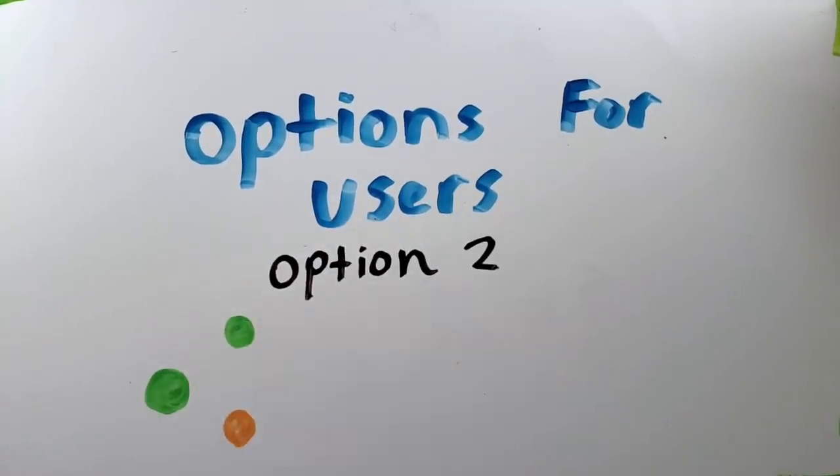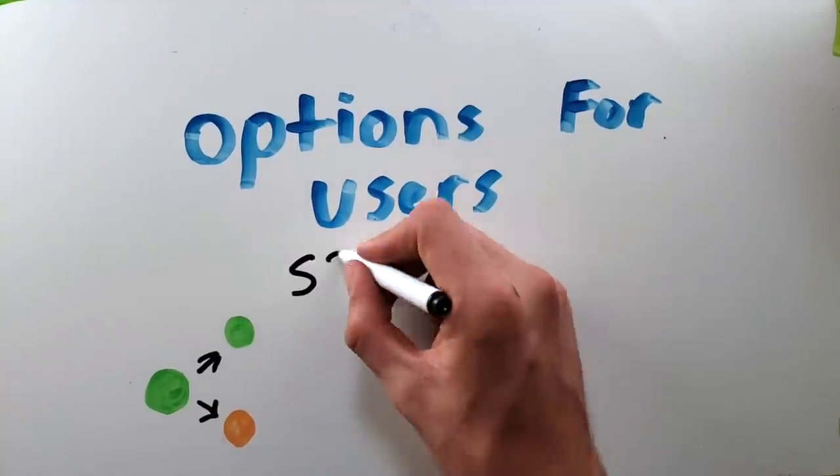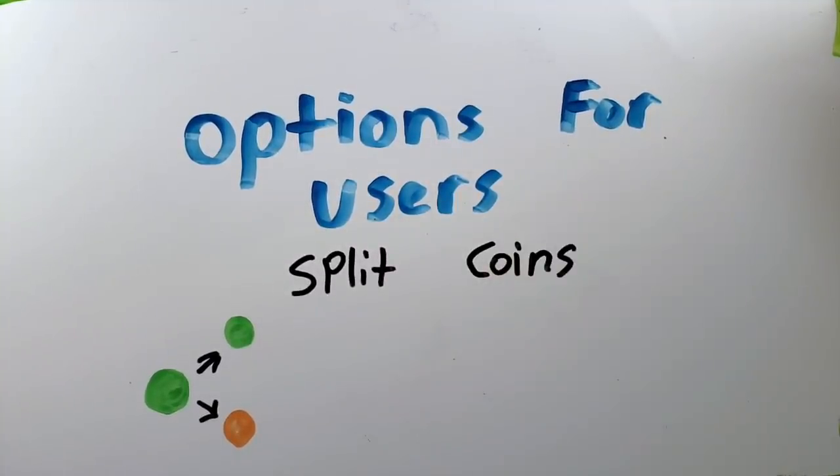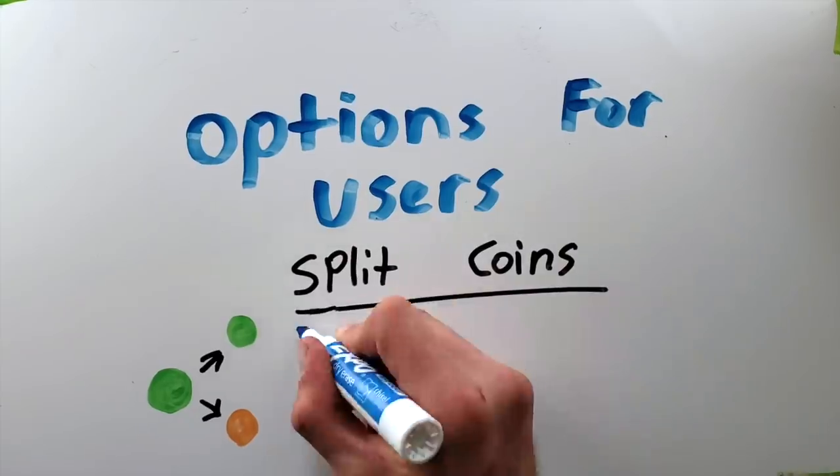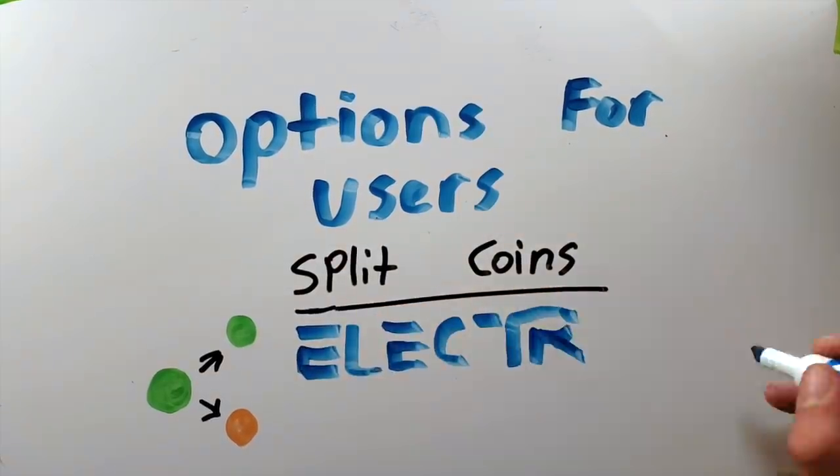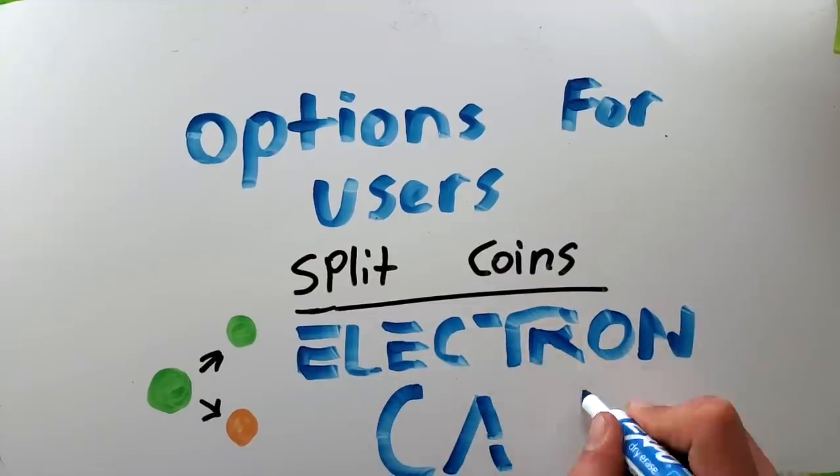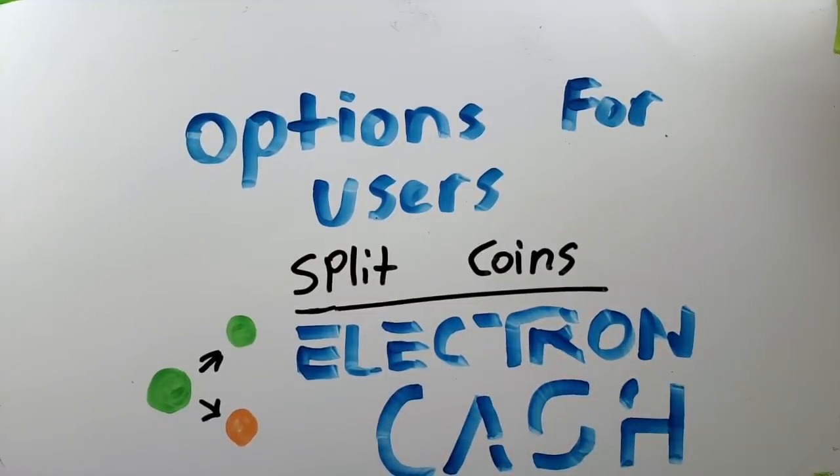Option number two: split your coins. You can do this by having some split coins sent to your address, and then combining them all into an output, and on the other side, you receive split coins. You can make your own split coins by using the Electron Cash plugin, and I'll link in the description the link to the plugin and a guide to use it.